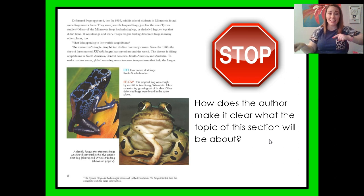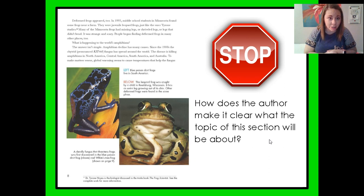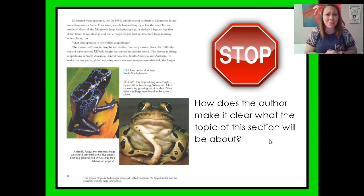So let's go ahead and get to reading. "Deformed frogs appeared too. In 1995, middle school students in Minnesota found frogs — some frogs near a farm. They were juvenile leopard frogs, just like the ones Tyrone studies. Many of the Minnesota frogs had missing legs or shriveled legs or legs that didn't bend. It was strange and scary. People began finding deformed frogs in many other places too. What is happening to the world's amphibians? The answer isn't simple. Amphibians decline. Amphibian decline has many causes."